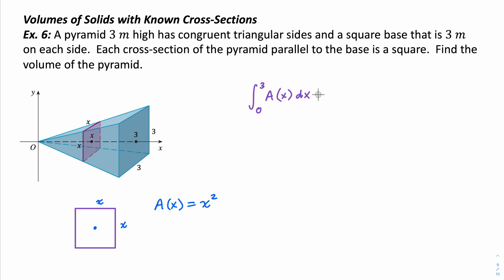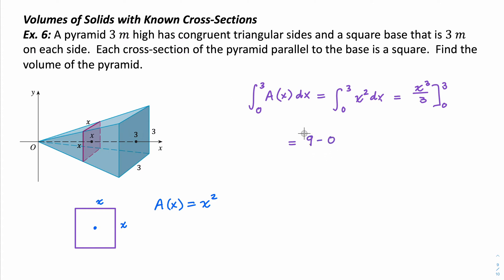So we can go ahead and find the integral. It's going to be the integral from 0 to 3 of x² with respect to x. Taking the antiderivative gives x³/3, evaluated from 0 to 3. Plugging in 0 gives 0. Plugging in 3: 3³ = 27, and 27/3 = 9. So it's 9 minus 0, which gives us 9 cubic meters. The volume of this pyramid is 9 cubic meters.